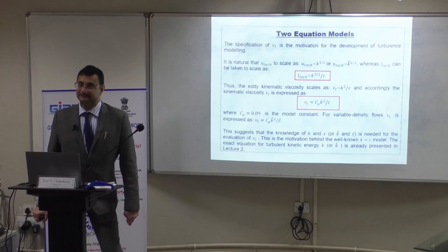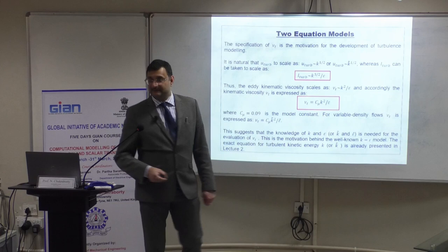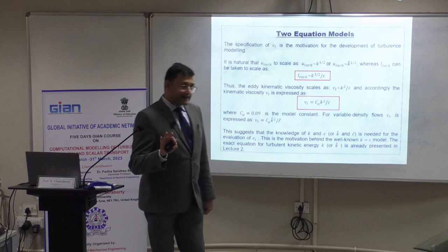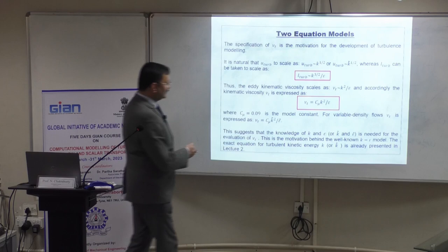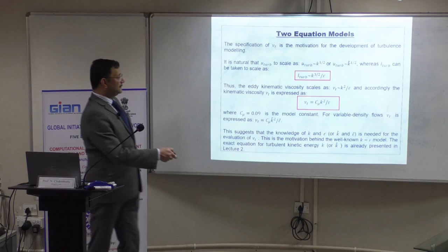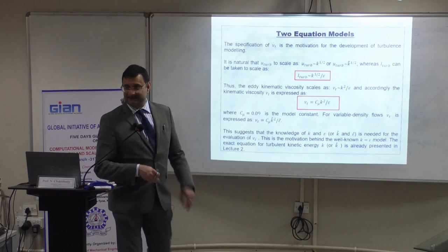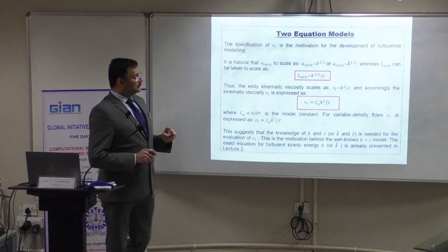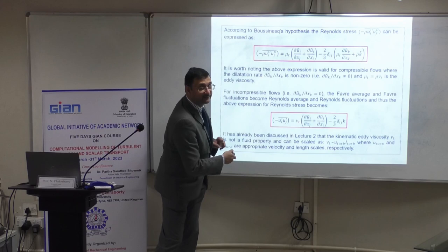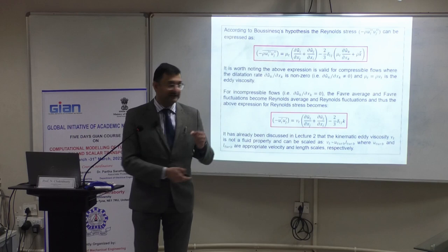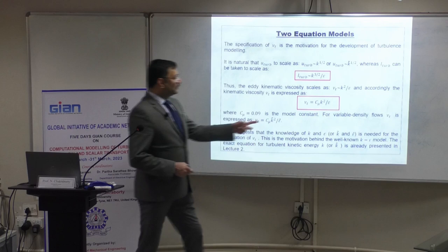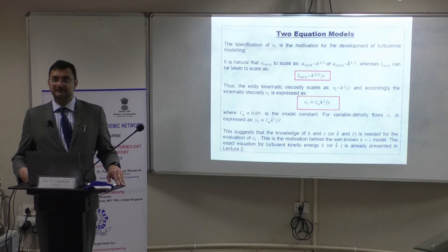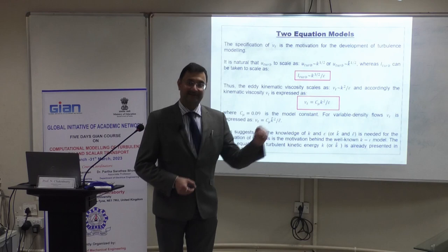Very often C_mu is taken to be 0.09. For variable density flows, the expression is the same using Favre-averaged kinetic energy and dissipation rate. In order to make this model work I need the dynamic eddy viscosity, and that comes from k and epsilon. If I can have knowledge of k and epsilon I can get my kinematic eddy viscosity — and that is really the motivation behind the k-epsilon model.